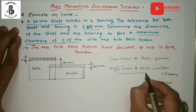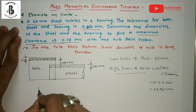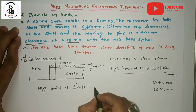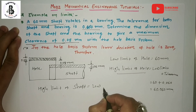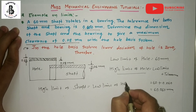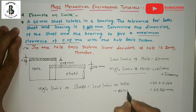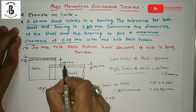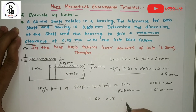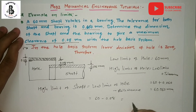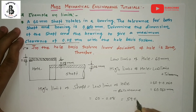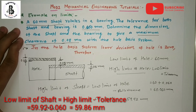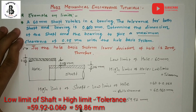The high limit of the hole is 60 + 0.060 = 60.060mm. For the high limit of the shaft, that is the low limit of the hole minus the allowance, which is 60 minus 0.08 = 59.92mm.